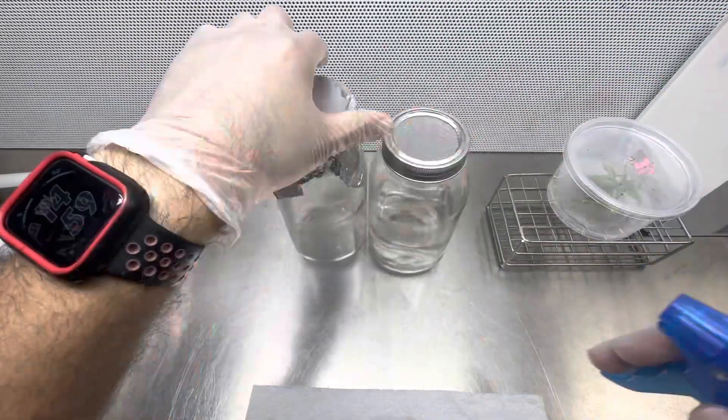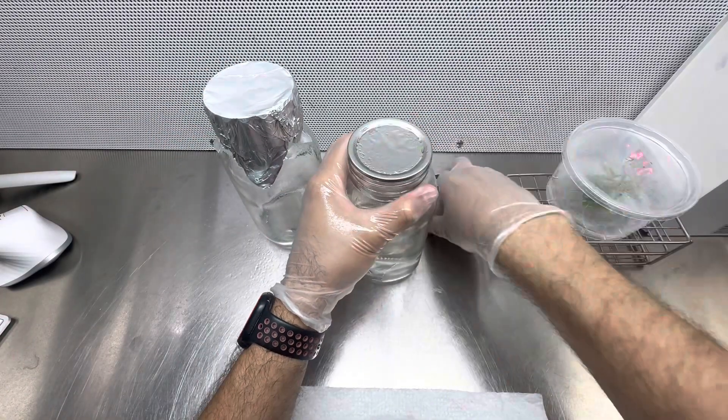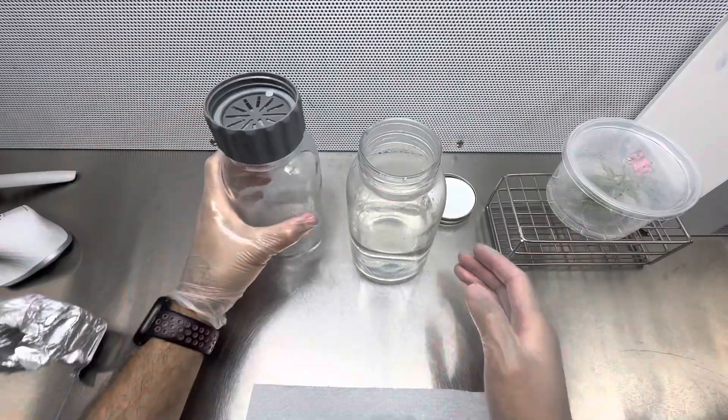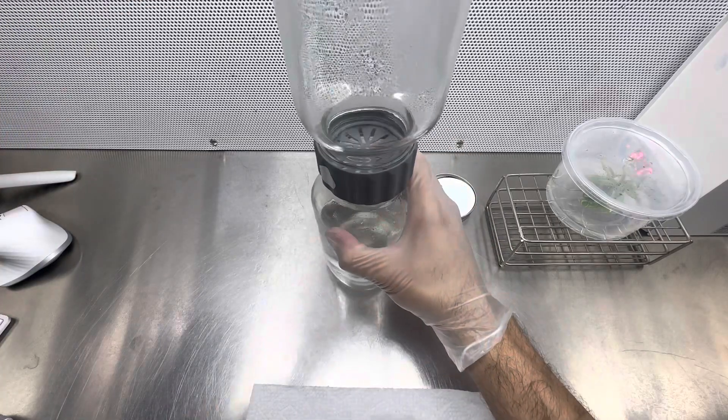Now that the biocouplers and the media have been sterilized, it's time to place them together. I spray everything with 70% isopropyl alcohol to keep everything sterile, then remove the foil from the biocoupler and place it on the jar with the media.